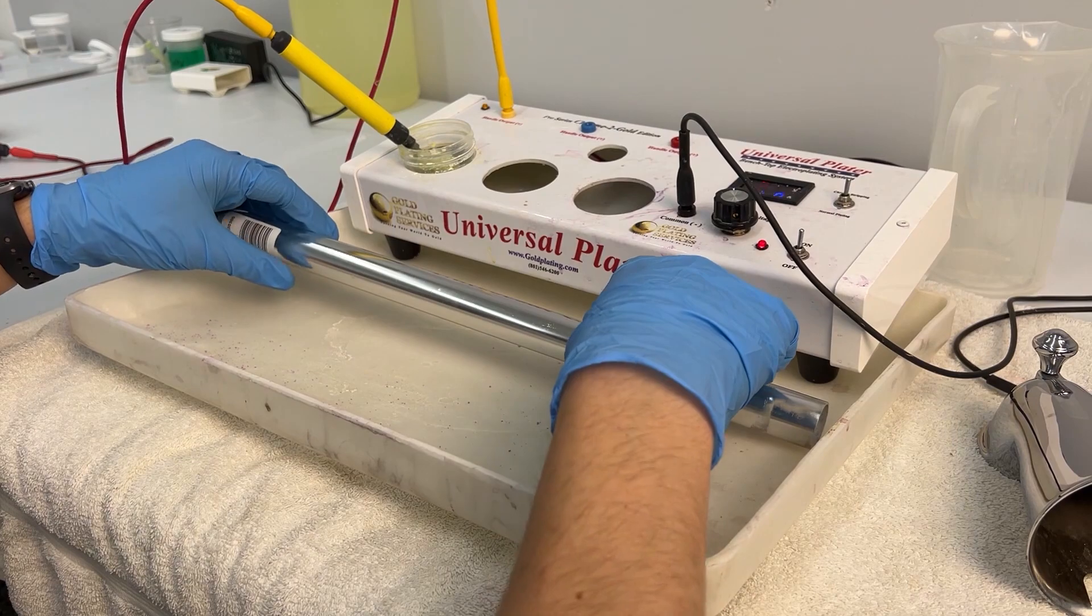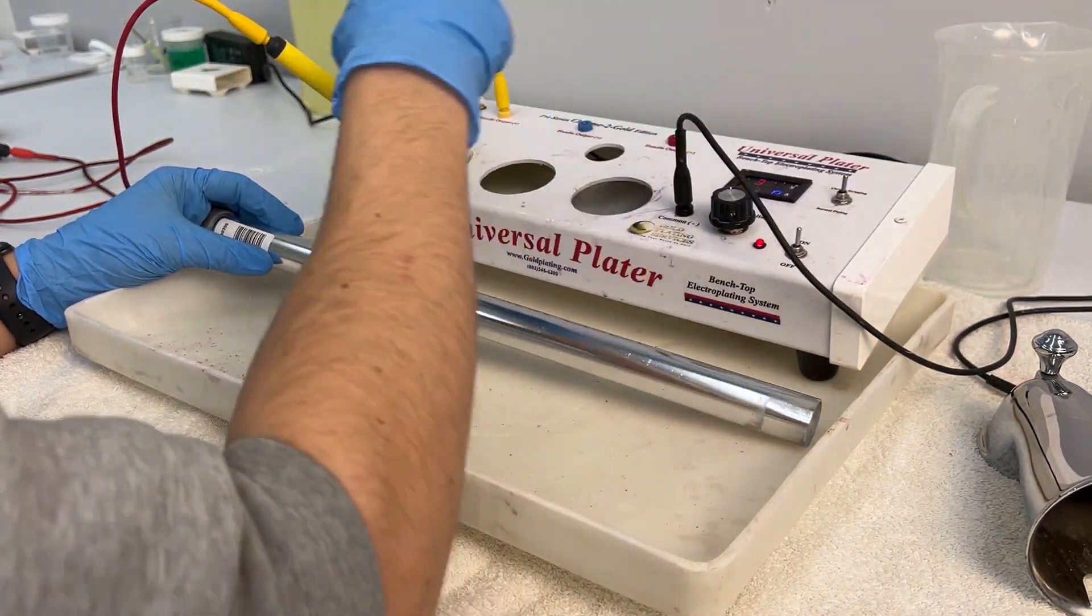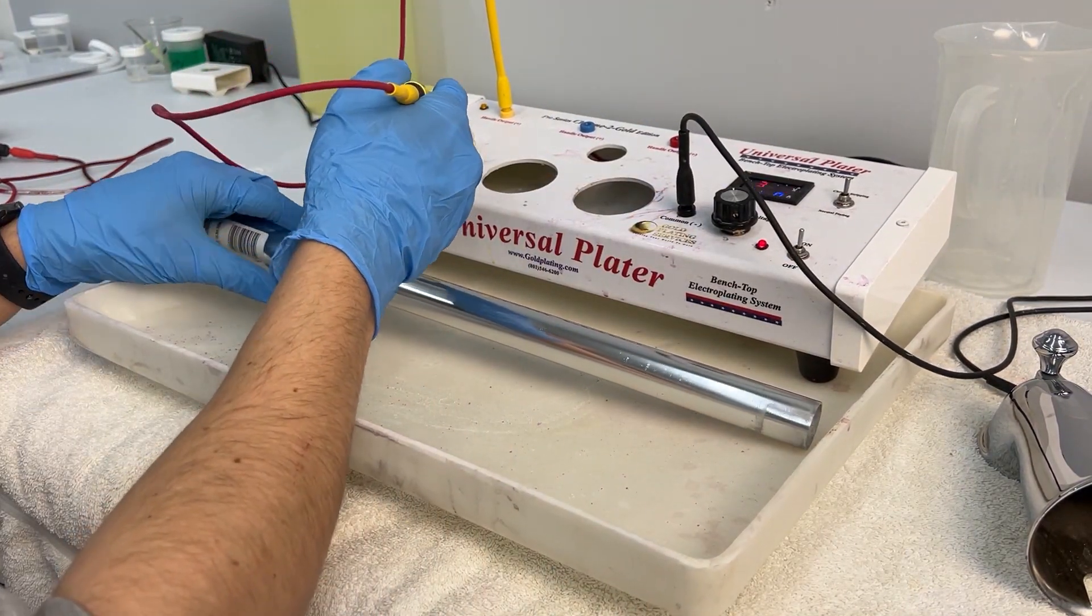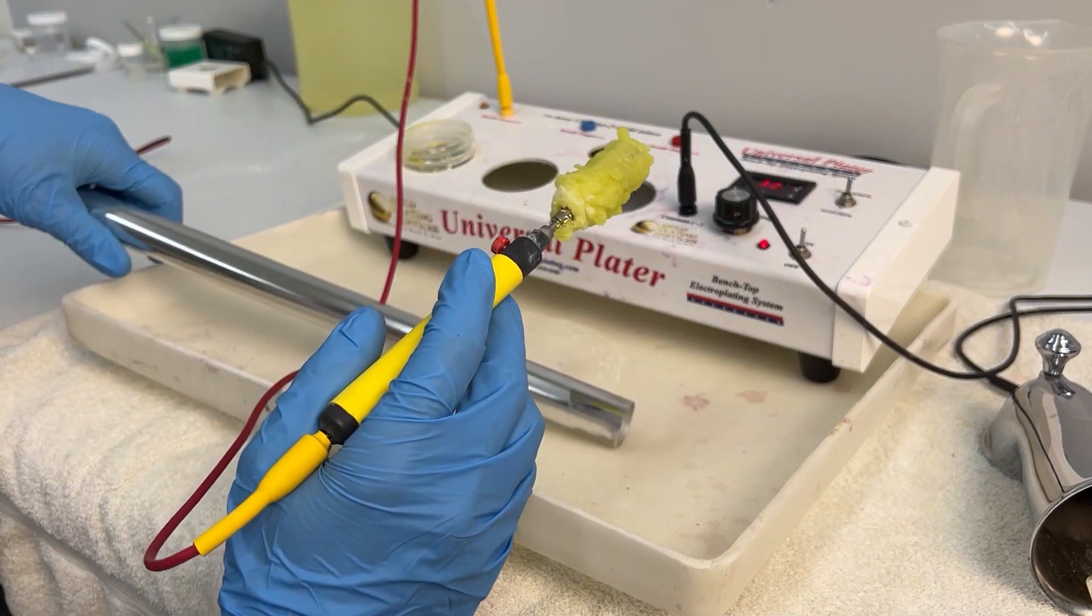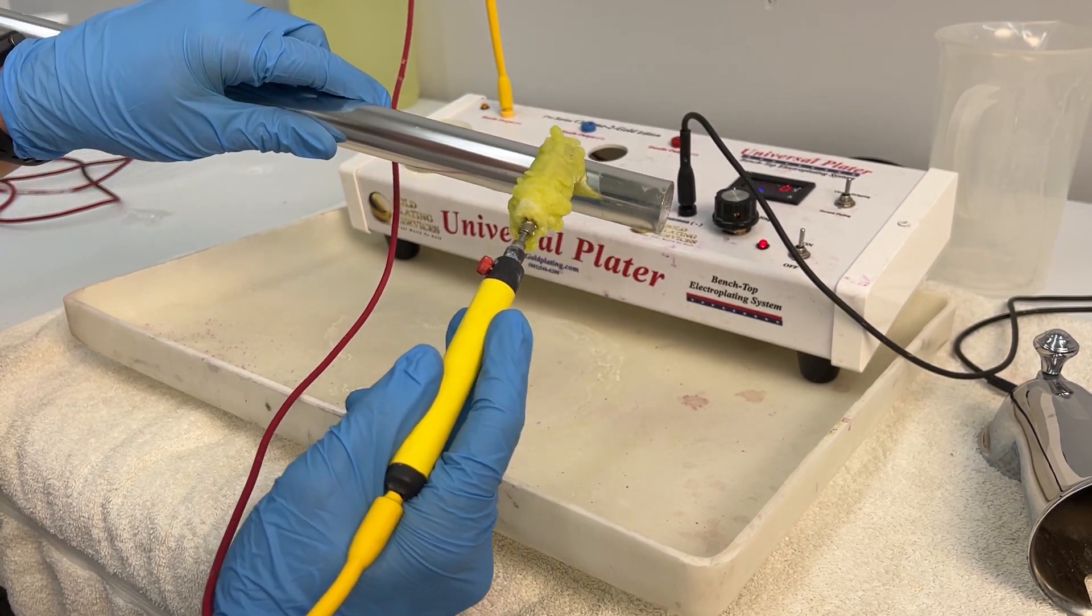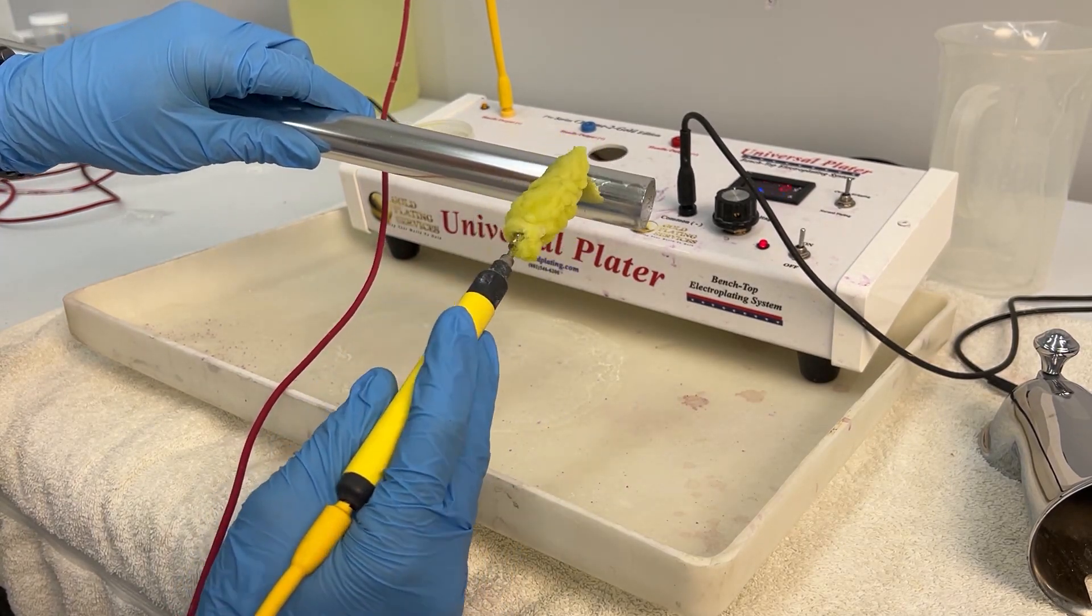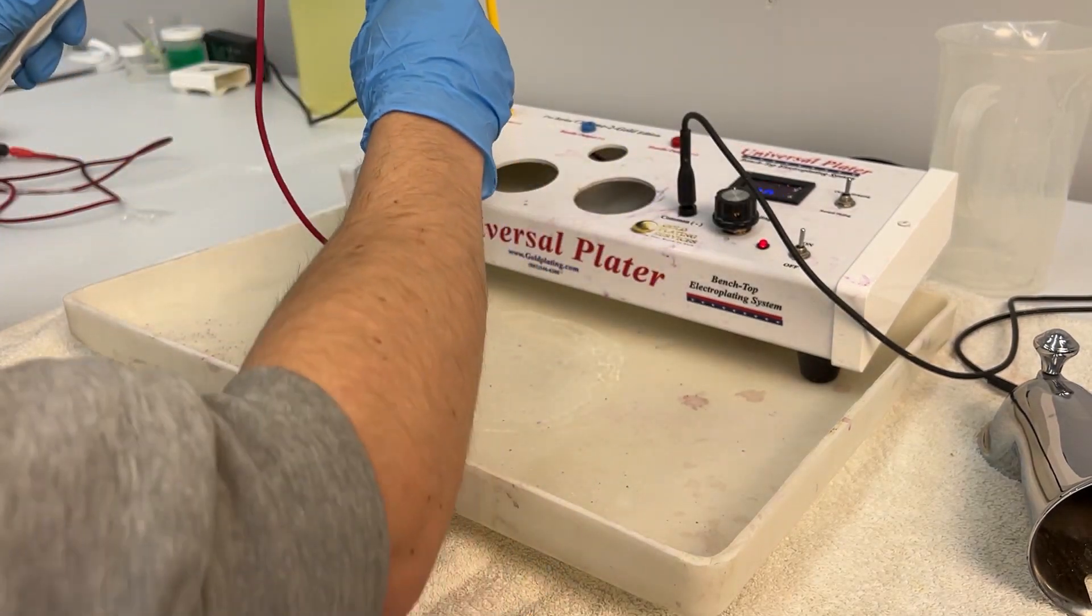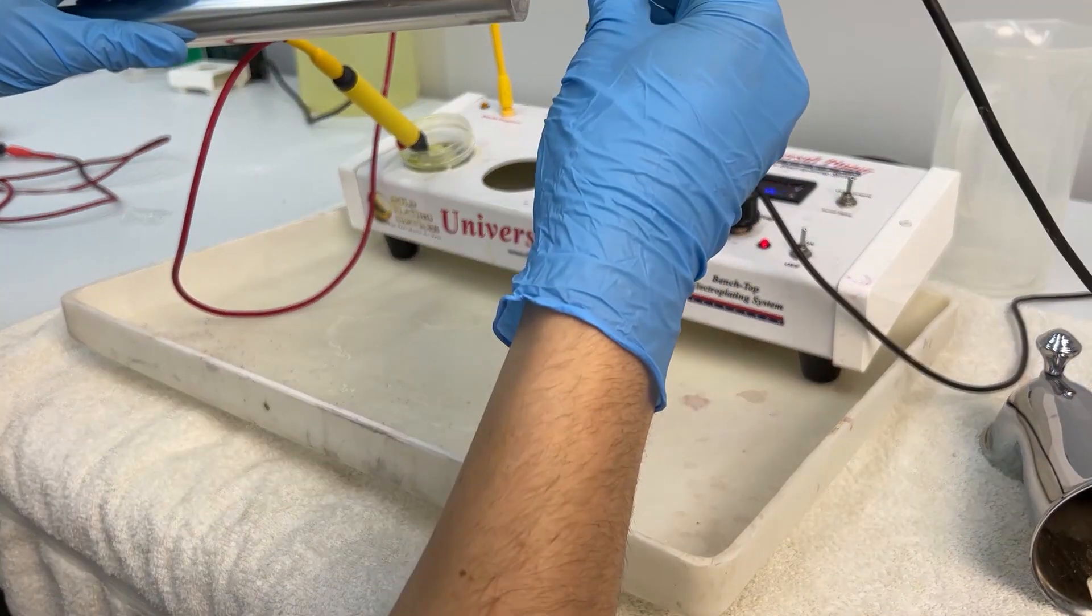So we're going to start off by chrome stripping this aluminum and when you are chrome stripping you can tell it's stripping the chrome off if it starts turning yellow. Our sleeve is a little yellow right now but aluminum when you do it will turn white. We need to get our connection on here. Aluminum will start turning this white color when you start polishing it or stripping it.